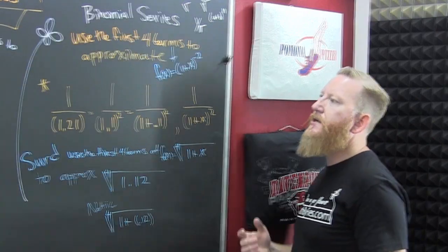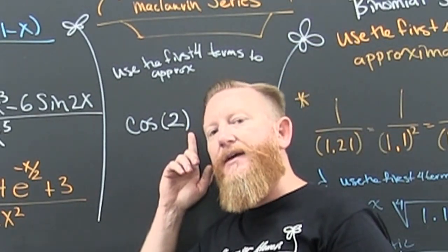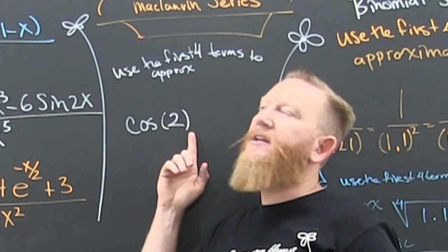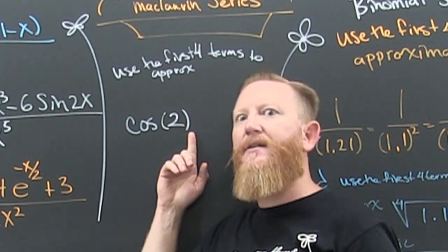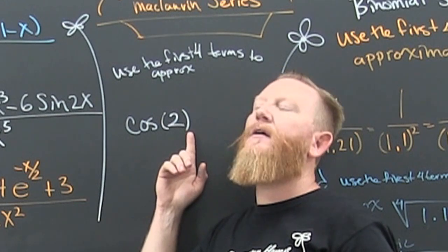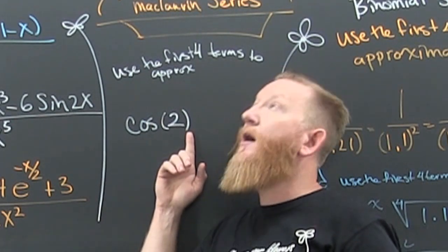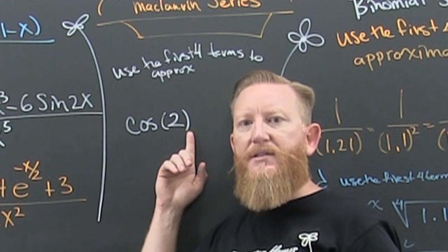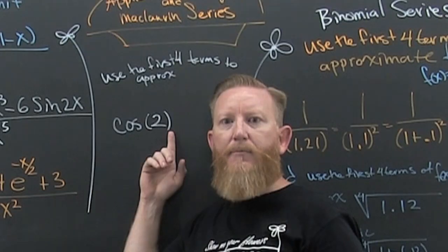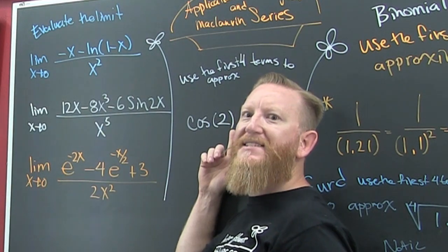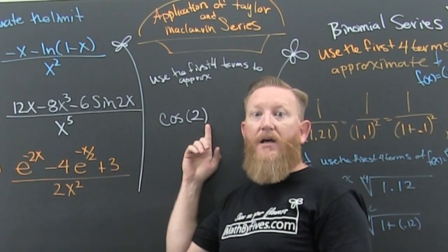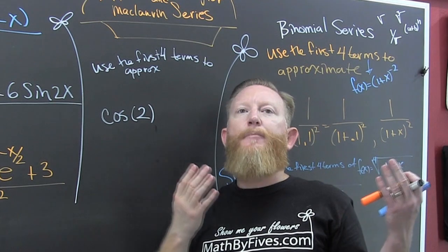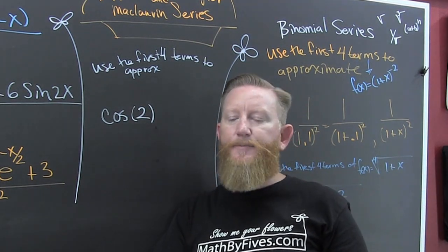Turns out your calculator doesn't have a list of all of the logarithms in the entire world. It doesn't have a list of all the trig functions, all the cosines, sines, tangents, cosecants, secants, cotangents, hyperbolic, everything's logarithm, all the different bases, log base 2, log base 3, log base 4, log base 5, log base 6. It doesn't have those all hardwired in some database. All it has is some kind of series representation behind it, because all your calculator can do is add.